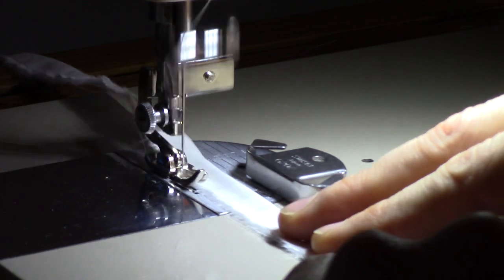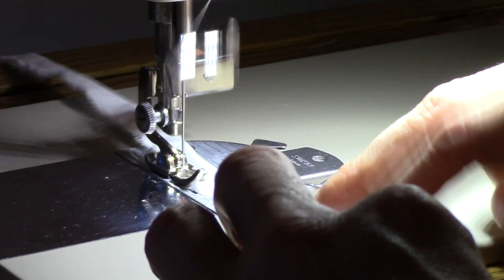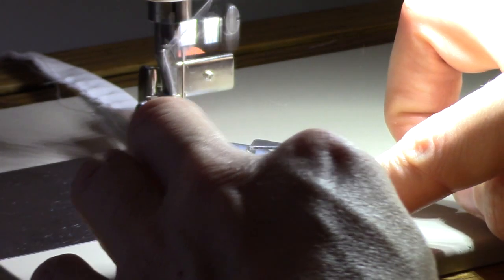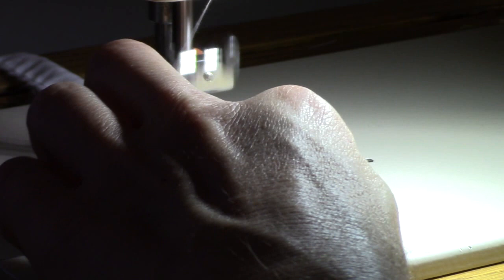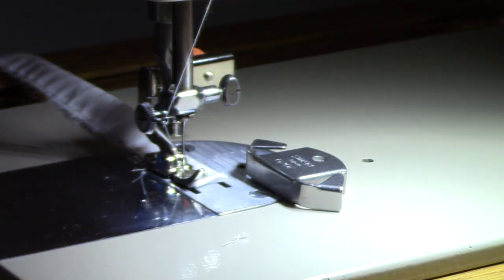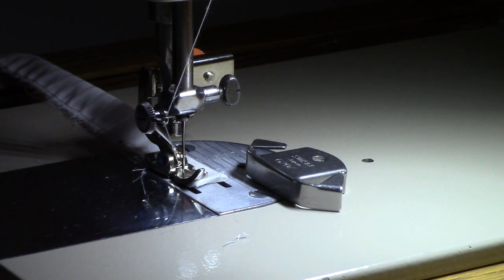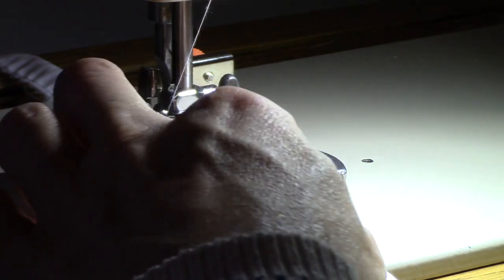So this is actually a needle adjustable, it's a Singer 237, it's adjustable needle position. But I am sewing in the left hand position at the moment, because I have a straight stitch plate that I haven't put on yet, and I just want to make sure because I'm sewing just two layers of shirting cotton.